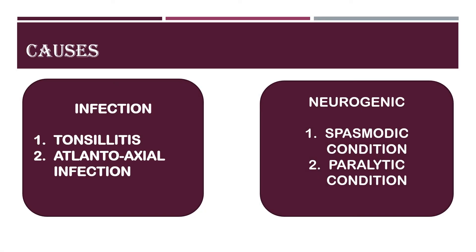Causes of acquired torticollis include infection, neurogenic, and ocular causes. Regarding infection: tonsillitis and atlantoaxial infection are causes, but torticollis appears as a secondary symptom. Tonsillitis can be complicated by a retropharyngeal abscess - a collection of pus in the back of the throat - which causes cervical pain, torticollis, swelling, inability to extend the neck, and stridor. It is only when tonsillitis becomes complicated with a retropharyngeal abscess that torticollis is seen.